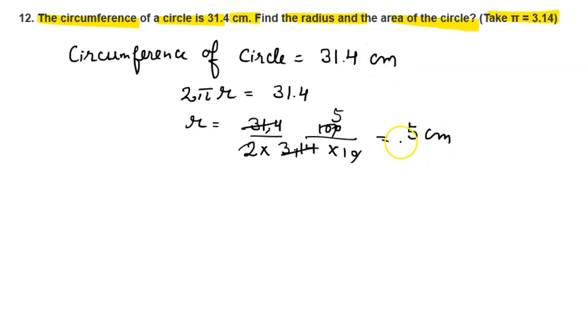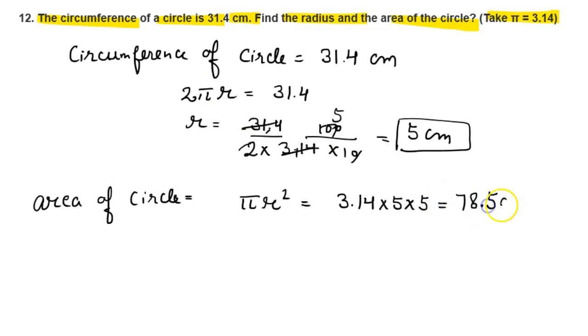So radius is 5 cm and we have to find area of circle. Area of circle equals πr² = 3.14 × 5 × 5 = 78.5 cm². So your answer is: radius is 5 cm and area of the circle is 78.5 cm².